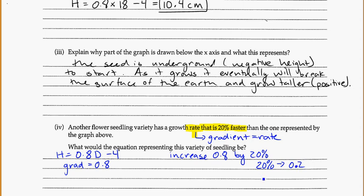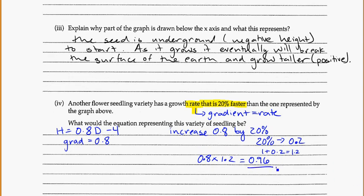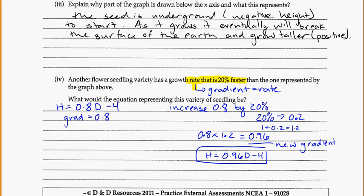20% is converted to 0.2 as a decimal. And to find the increase, we're going to times it by 1 plus 0.2. So 0.8 times 1.2. And our answer for this is actually going to be 0.96. So this is the new gradient. It's the 20% faster rate. So instead of writing our equation as h is equal to 0.8d minus 4, we're going to say h is equal to 0.96d minus 4. So the same y-intercept, meaning we're still starting 4 centimeters under the surface of the Earth, and that we're just going to grow 20% faster at 0.96. So that's the equation for this one.